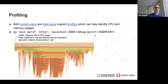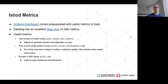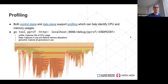As a last line of defense for performance issues, both the control plane and data plane support Go profiling, which captures where memory and CPU time is spent and can produce flame graphs. This is highly recommended if you're having performance issues. Even if you don't need to analyze it yourself, attaching a profile to a GitHub issue makes it much easier for the Istio team to diagnose problems.